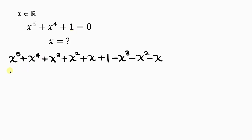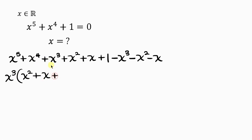Our next step is to group them 3 by 3: take the first 3 terms, the second 3 terms, and the third 3 terms. For the first 3 terms, notice that x to the power of 3 is common, so we factor that out. We get x cubed times (x squared plus x plus 1), since x⁵ ÷ x³ = x², x⁴ ÷ x³ = x, and x³ ÷ x³ = 1.